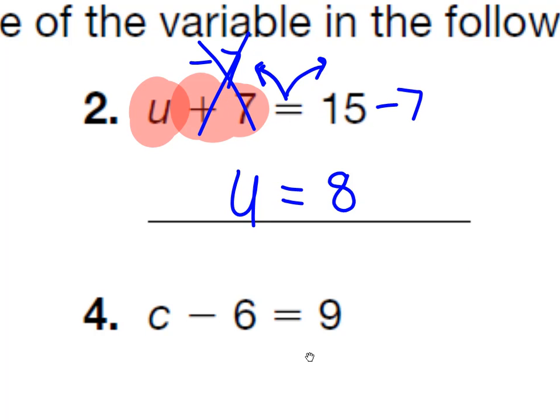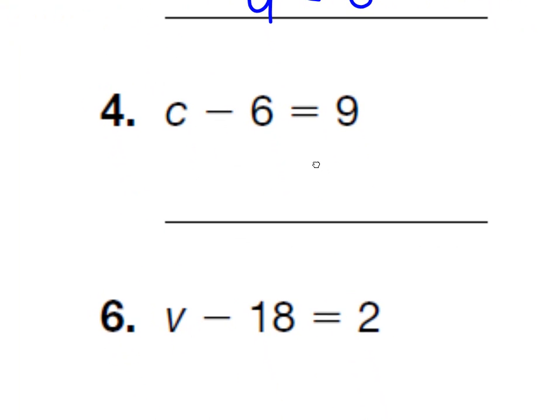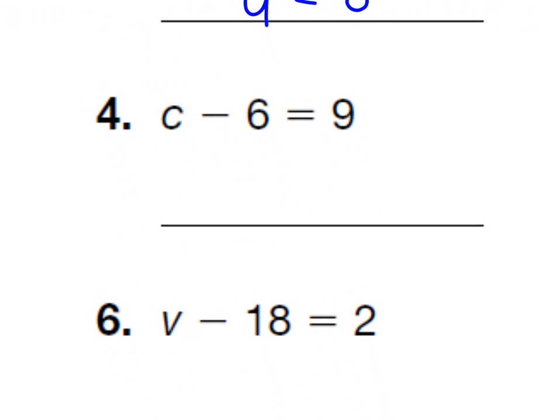Now let me do one more. I'll do number 4 down here for you because this is a take away, which works the same way. So our variable on this one is C. C take away 6. C take away 6 equals 9. So we have to figure out what the inverse is. The inverse or the opposite of take away 6 would be plus 6. And what we do to one side, we do to the other, plus 6.